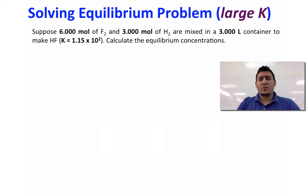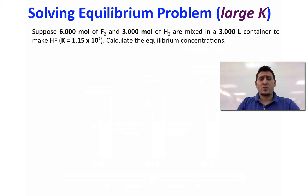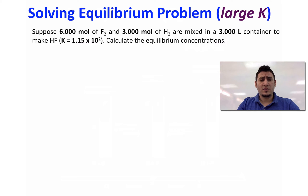Now let's solve an exercise on chemical equilibrium in a case where the equilibrium constant K is large. Suppose 6 moles of fluorine and 3 moles of hydrogen are mixed in a 3-liter container to make hydrogen fluoride, where the equilibrium constant is equal to 1.15 times 10 to the power 2. Calculate the equilibrium concentrations.